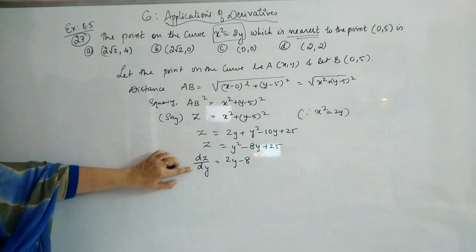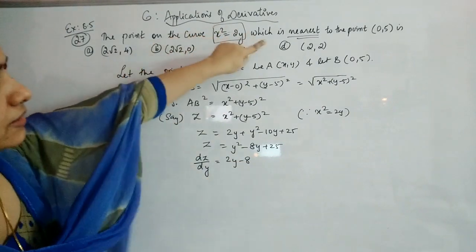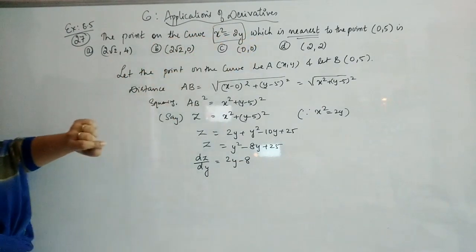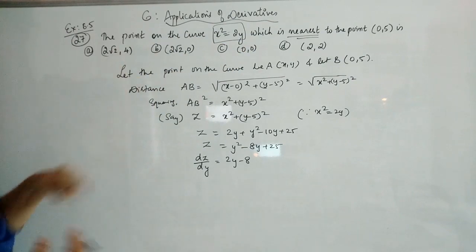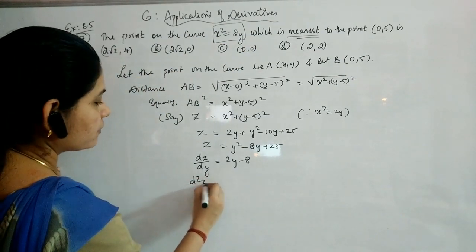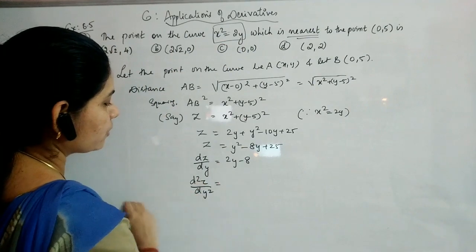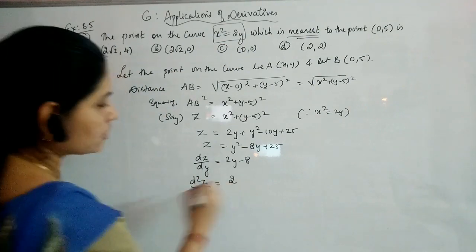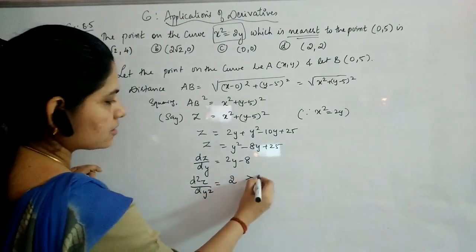For the second derivative: the second derivative should be greater than 0 to confirm it is a minimum distance. Differentiating again gives 2, which is greater than 0.